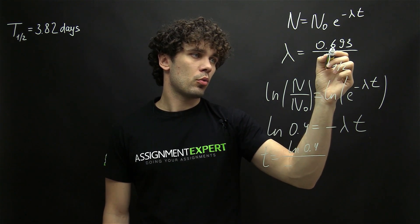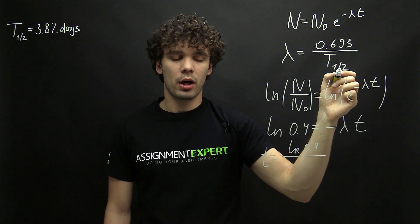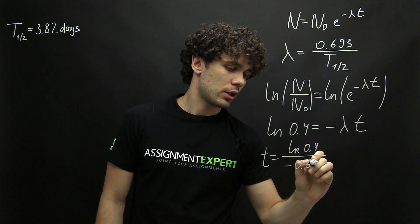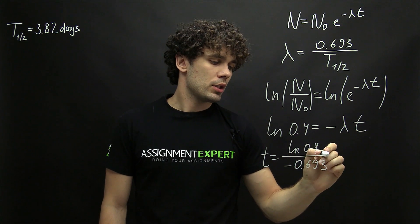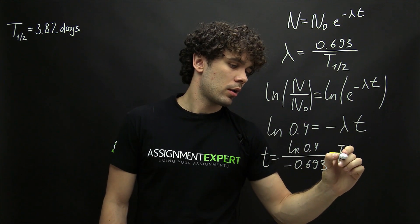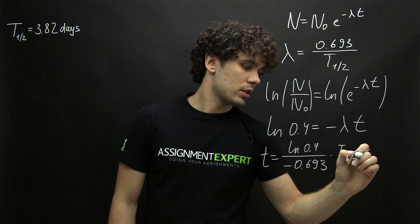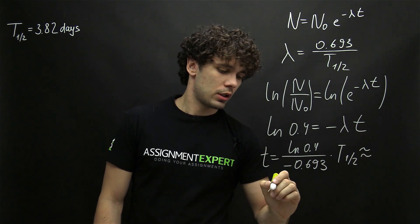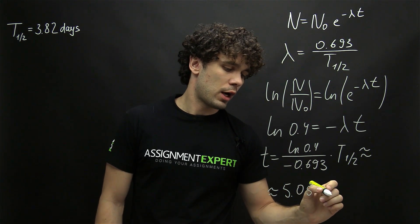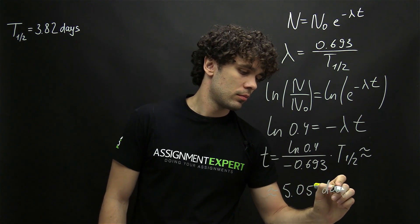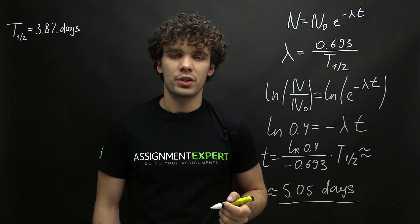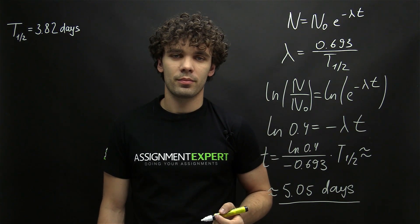From here we can derive t as ln(0.4) divided by negative lambda. Lambda is 0.693 divided by the half-life, so we have negative 0.693 in the denominator and the half-life moves up — we multiply by the half-life. This gives us approximately 5.05 days. So this is the time needed for 60% of radium to decay. Thanks for watching.